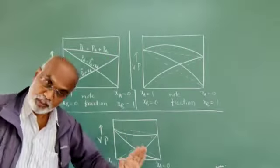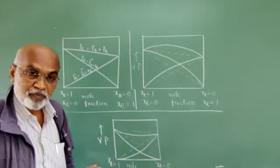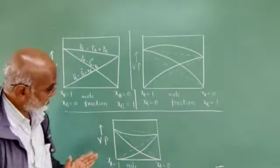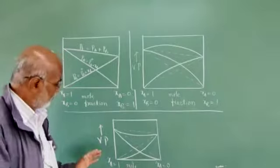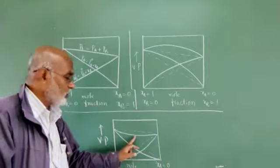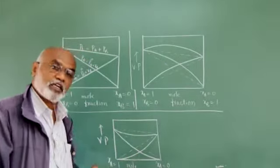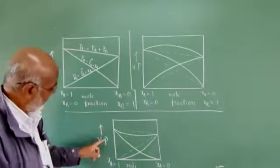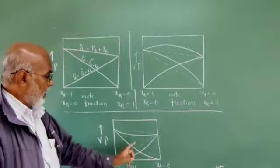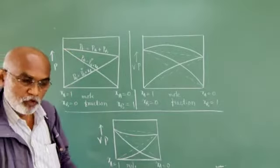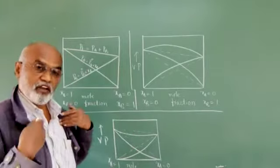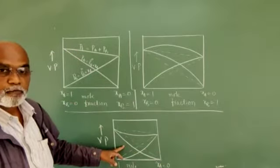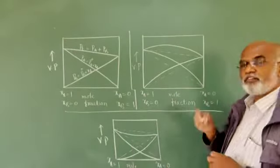Coming to another type of binary liquid mixture — again a non-ideal solution deviating from Raoult's Law. In this case, the dotted line again represents the vapor pressure expected from Raoult's Law, the theoretical expectation. Practically, when we plot a graph of vapor pressure versus mole fraction, the observed vapor pressure is always less when compared to the theoretically expected vapor pressure. When a graph of vapor pressure versus mole fraction shows a minimum, we say that binary liquid mixture shows negative deviation from Raoult's Law.